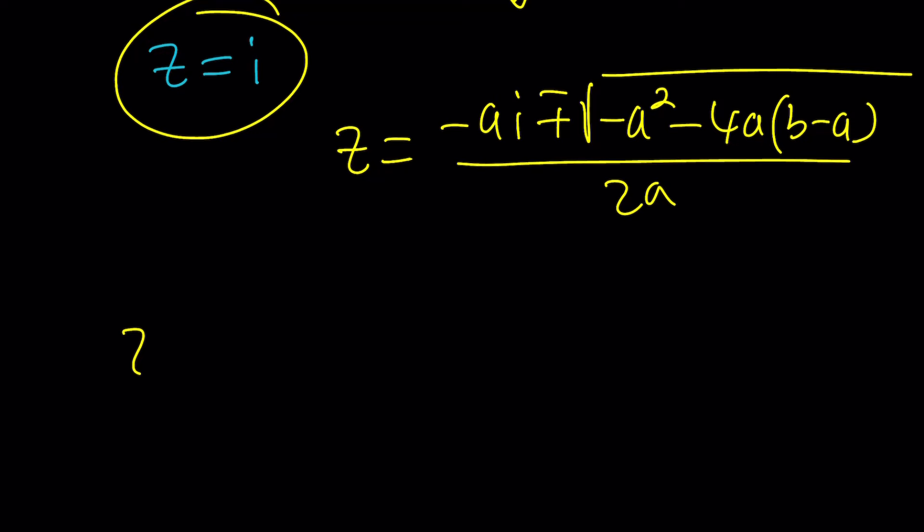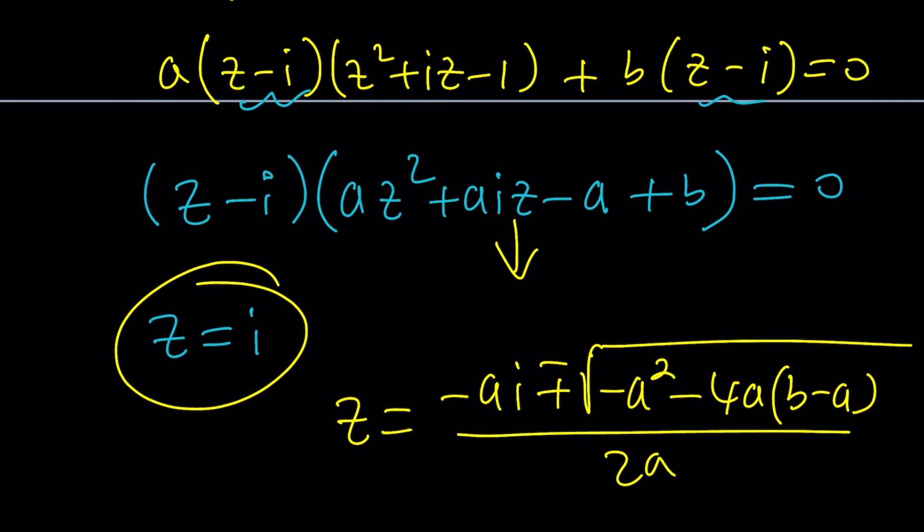Let's simplify this a little bit. We're going to get Z equals negative AI. Not artificial intelligence, it's just AI. And then negative A squared. And then I have 4A squared.